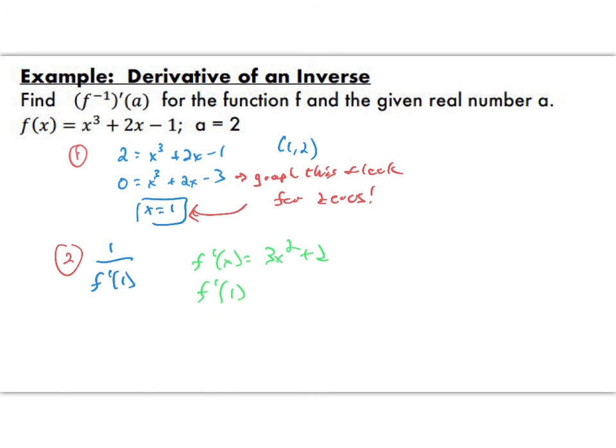F prime of 1 should be, well, 3 times 1 squared plus 2. I hope that's 5. As a result, our answer here is 1 fifth. So a couple of examples on finding the derivative of an inverse function. The math behind it is a little complicated to try to process as to why we do things the way we do. But that's how we do them. There you go.